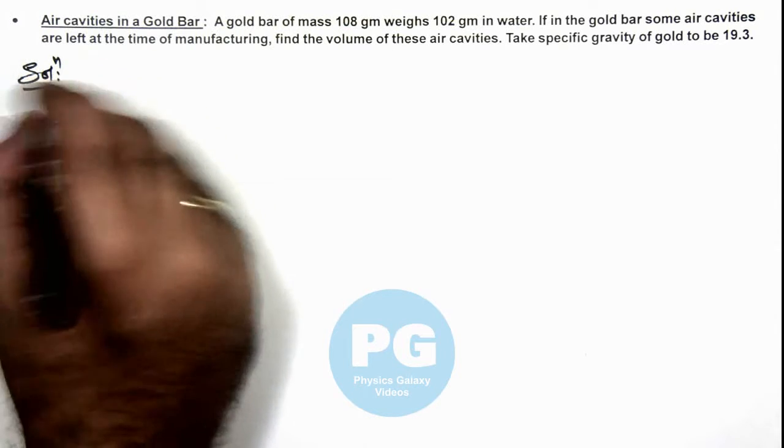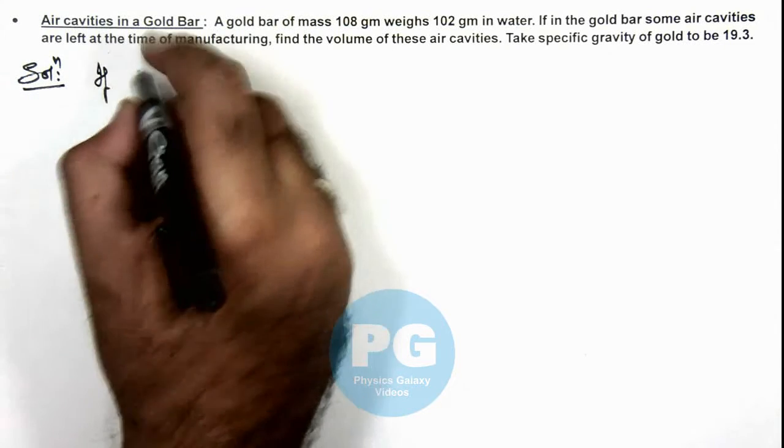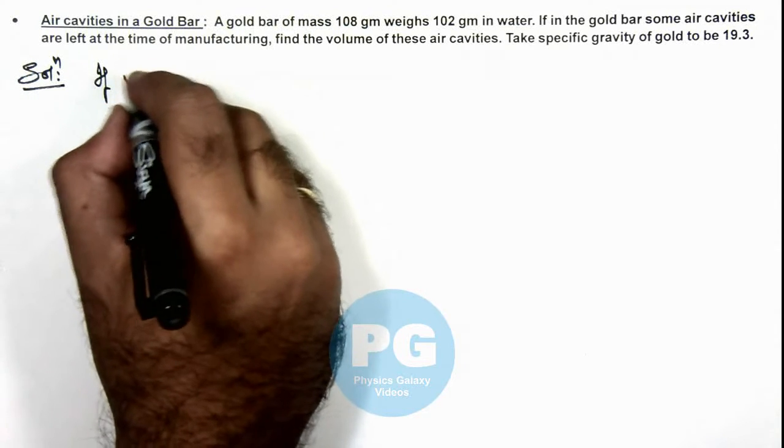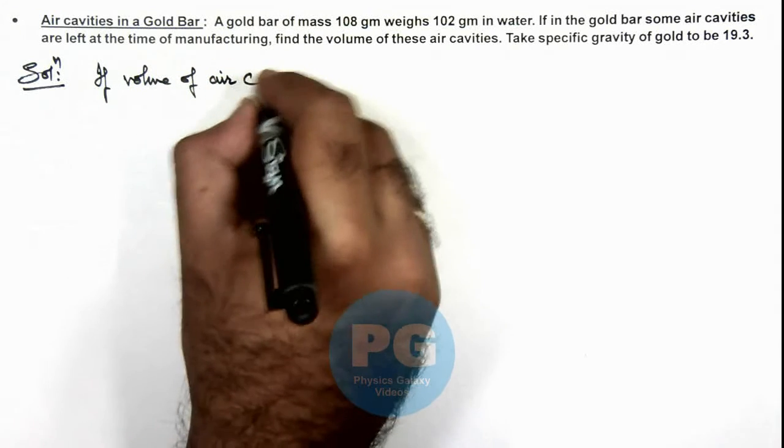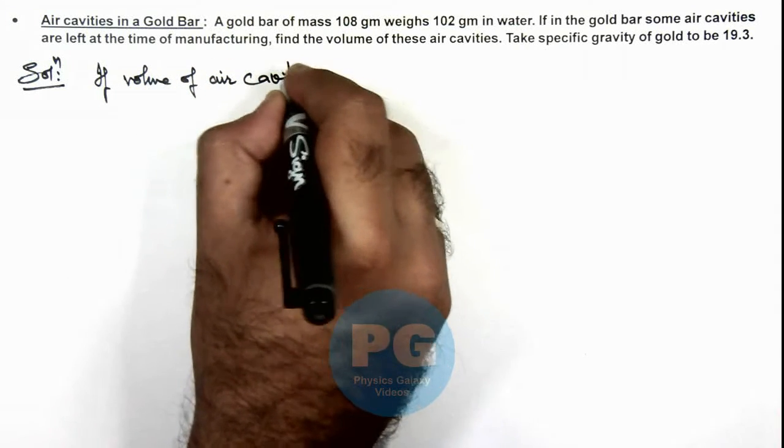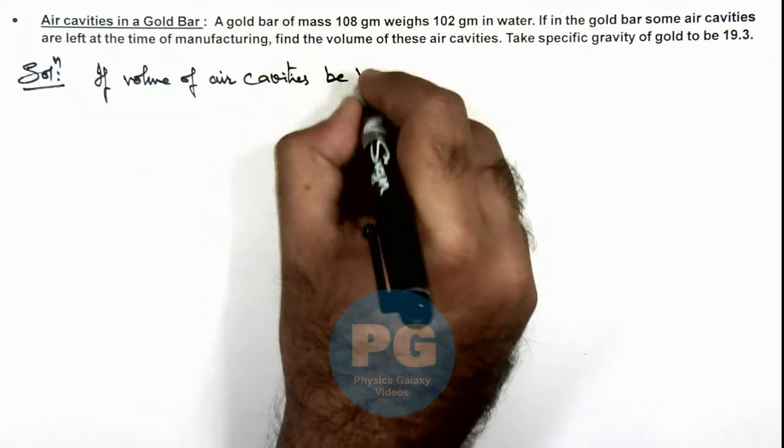In solution here, if we consider that volume of air cavities be Vc, then we can write the total volume of the gold bar.